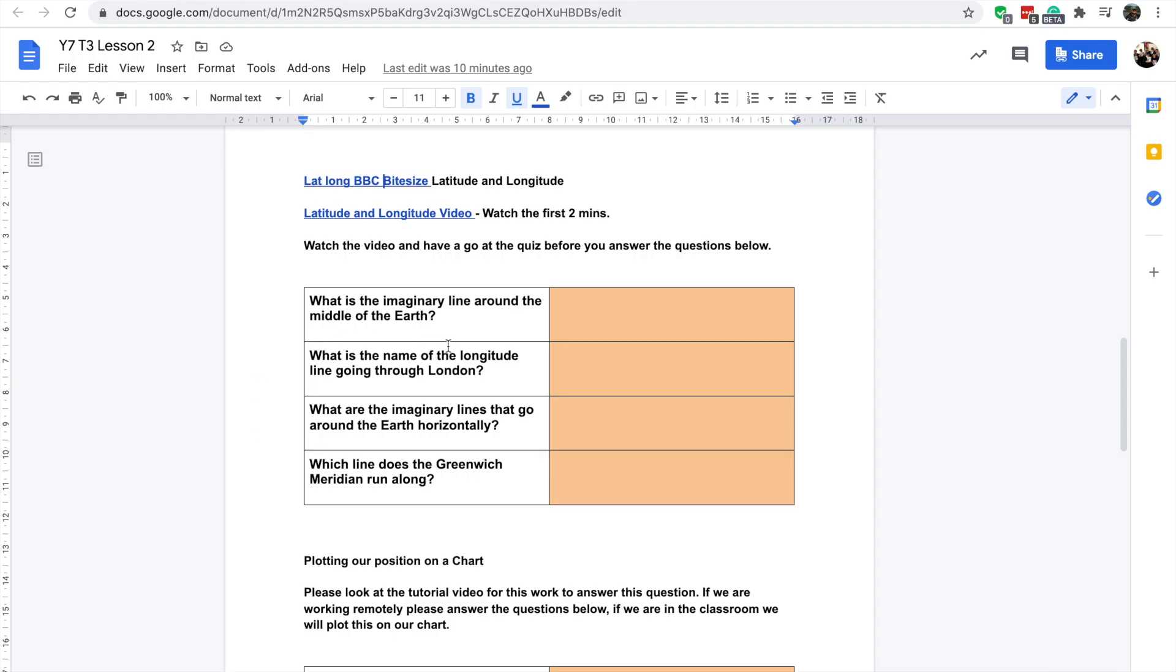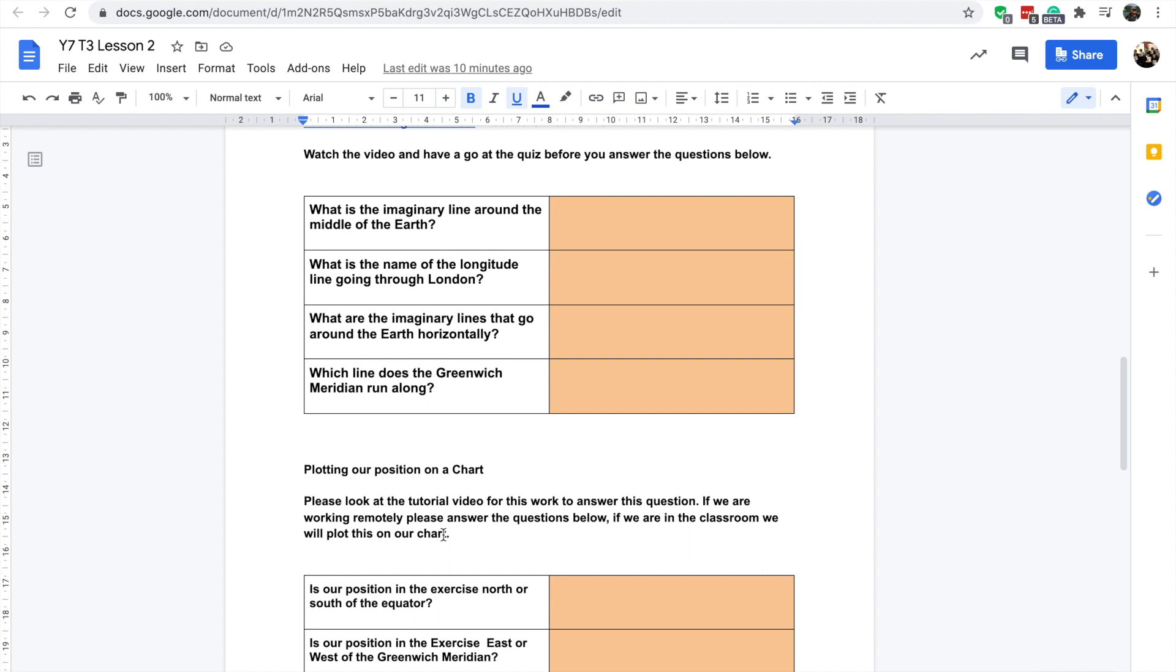What is the imaginary line around the middle of the earth? So we've got the globe around the middle of the earth. What is the imaginary line? You should have known that from geography. If not, go back to the video. What is the name of the longitude line going through London? That actually goes through Greenwich at the Royal Observatory. So what is the name of that? That was in the video. What are the imaginary lines that go around the earth horizontally? And that was in the video as well. Which line does the Greenwich Meridian run along? So which line or what is the line named that the Greenwich Meridian runs along?